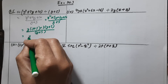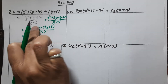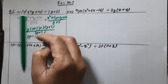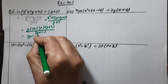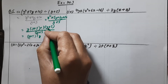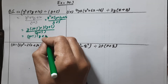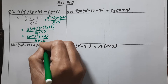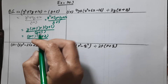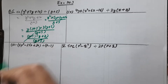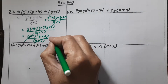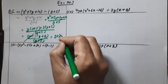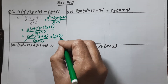From the numerator take (y plus 5) common — we are left with (y plus 2) in the bracket. In the denominator we have (y plus 5). Now (y plus 5) with (y plus 5) cancels, and we are left with only y plus 2, which is our answer.